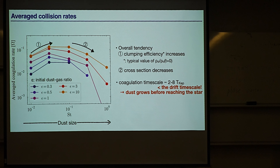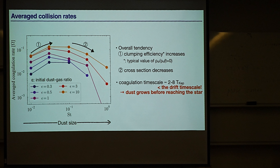Question: You said streaming instability-induced clumping allows dust grains to efficiently coagulate. But once you consider other turbulence driving mechanisms, this story could be different. Answer: That is also a good question. We didn't include other sources of gas turbulence. Our expectation is that dust grains are shielded from external turbulence if the local dust-to-gas ratio exceeds unity, because dust is the dominant mass component in that region and gas cannot perturb the dust. But that's a naive expectation, so we should explore more.